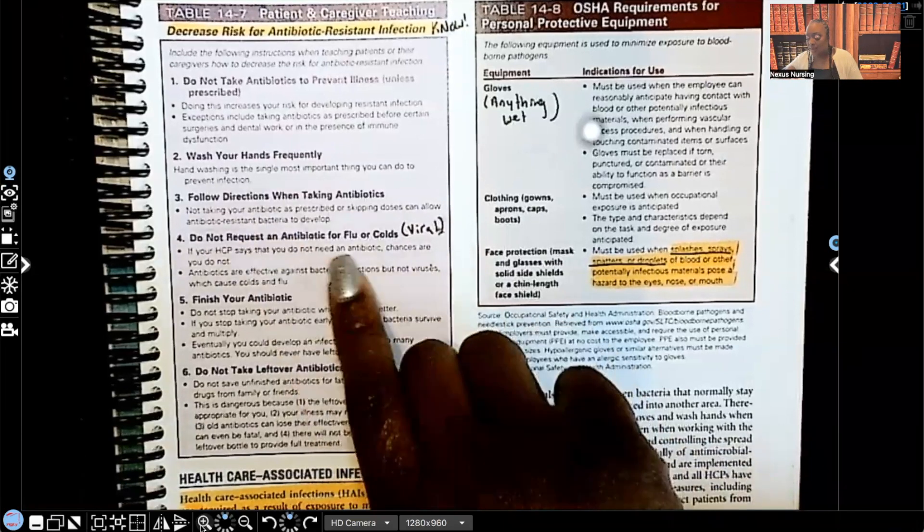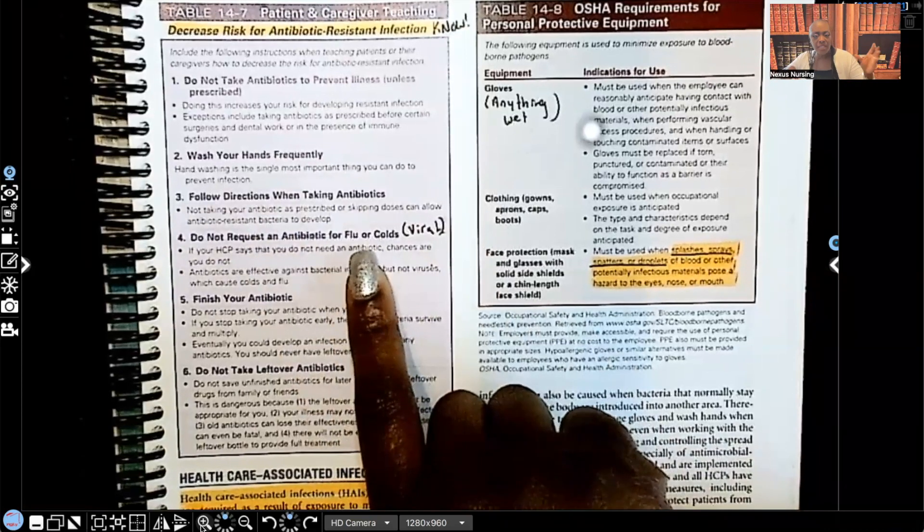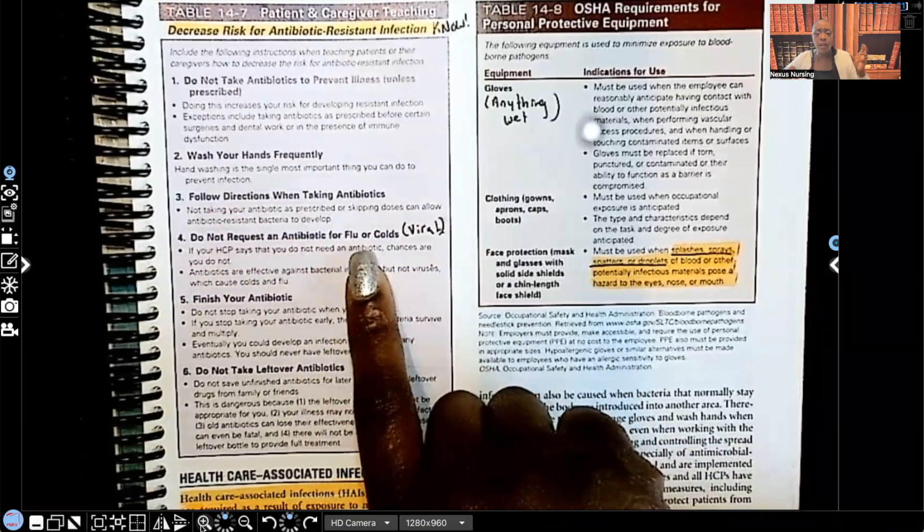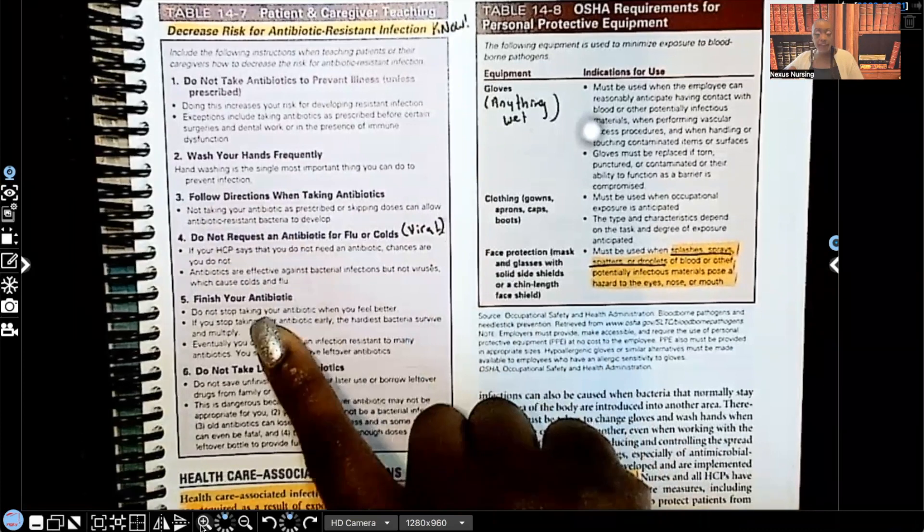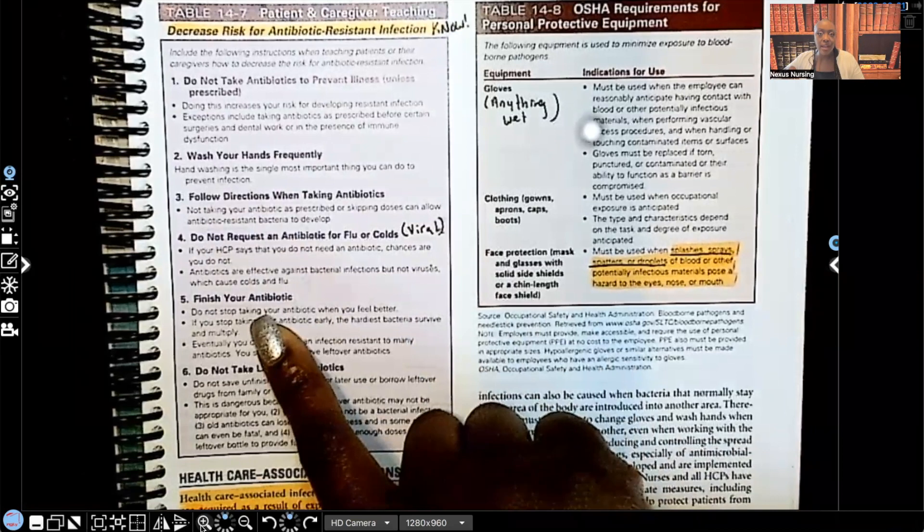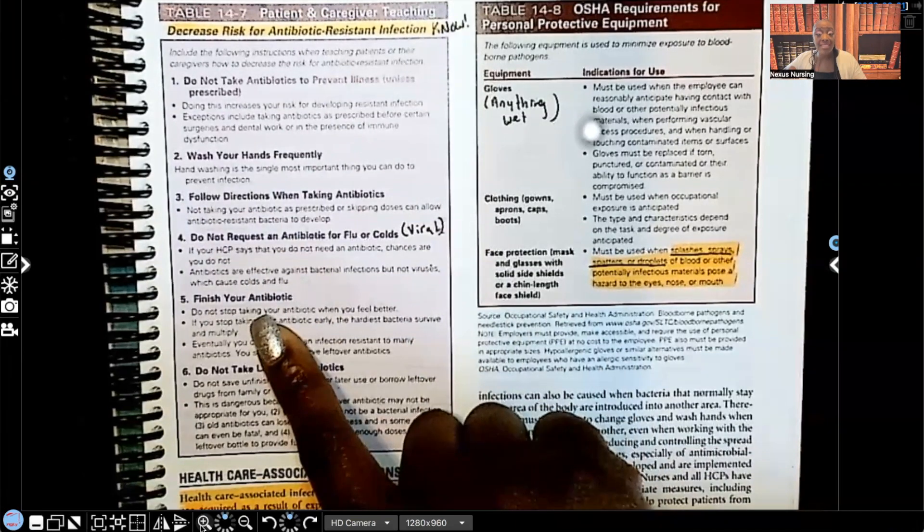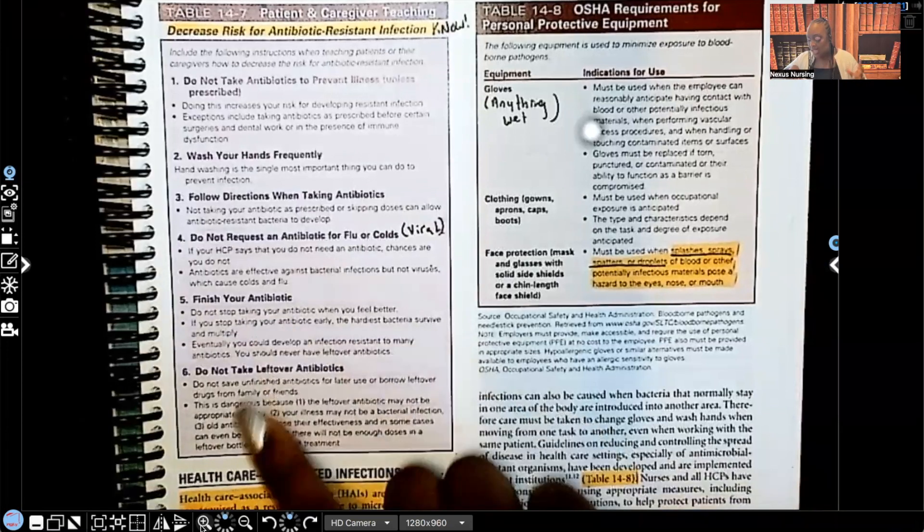Do not request an antibiotic for flu or cold. Those are viral infections. So you have to teach that to the patient, teach them. If the nurse practitioner, the physician assistant, the doctor says that you have a viral infection, don't be asking for no antibiotics. Stop. Finish your antibiotic. Don't try to save some for a rainy day. Don't try to save some for if you get sick again. You need to take the entire course because if you don't, the chances are this infection is going to come back and it's going to come back worse.